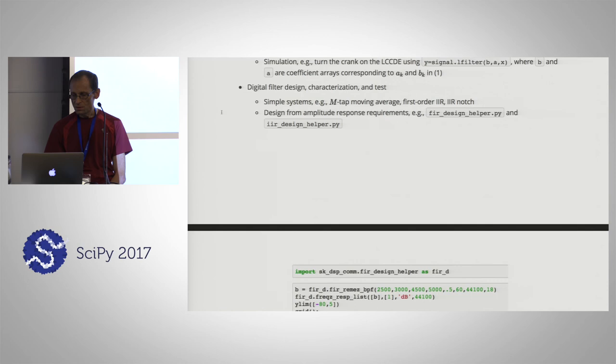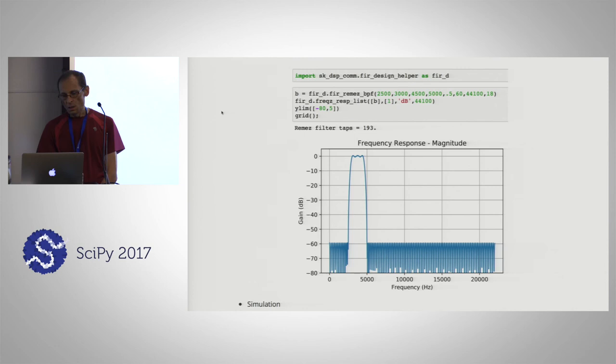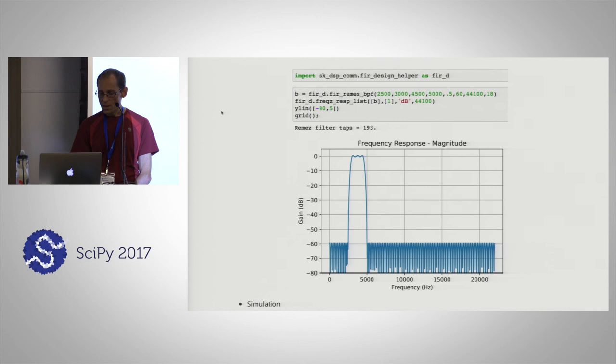We're going to drill down on a couple of types of filters and the FIR and IIR design helpers. A quick example of how easy it is: import FIR design helper, and suppose I want to do an equal-ripple band-pass filter using the Remez exchange algorithm. This is all built into the package — you just specify the cutoff frequencies, the passband gain, and the stopband attenuation. There's also a supporting function that can plot and overlay filter responses.